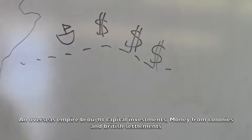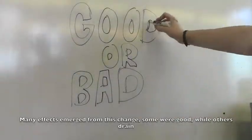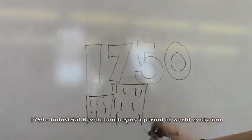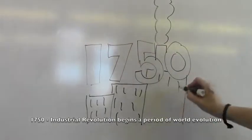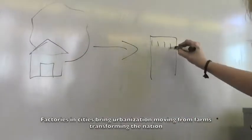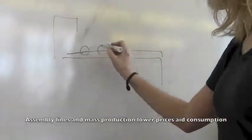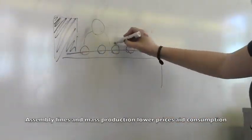British settlements brought many effects from this change - some good, while others drain. The Industrial Revolution begins a period of world evolution. Factories and cities bring urbanization, moving from farms, transforming the nation. Assembly lines and mass production lower prices and aid consumption.